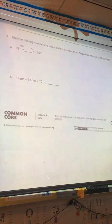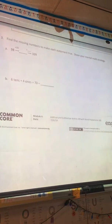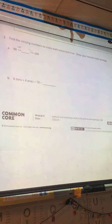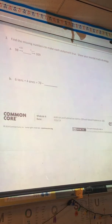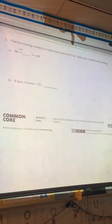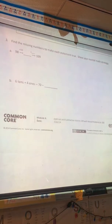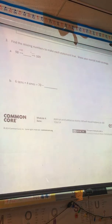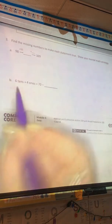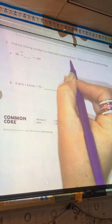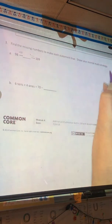This is Engage New York, second grade, module four, end of module assessment. The content covered is addition and subtraction within 200, with word problems to 100. I'm going to model the solutions for question three, which is a five-part question. Number three, find the missing numbers to make each statement true. Show your mental math strategy.